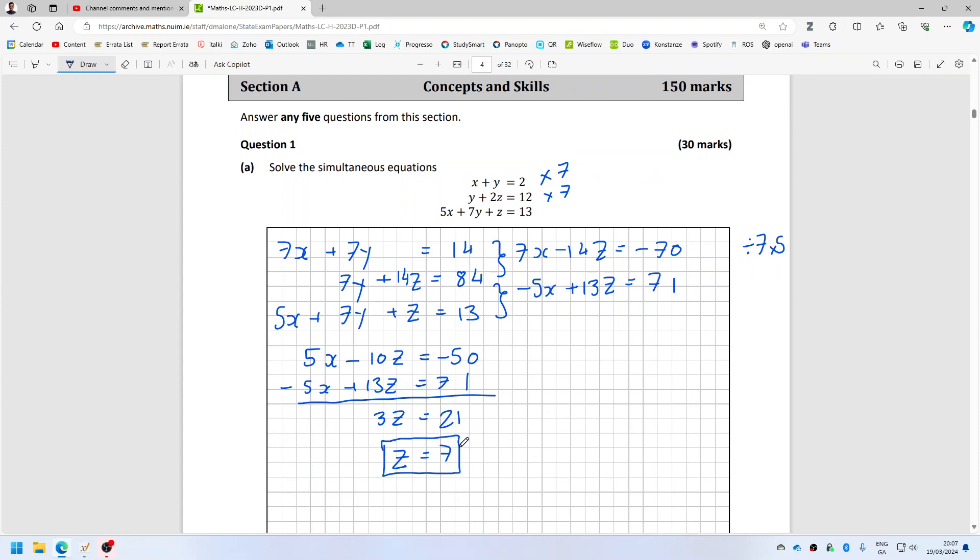And then I can substitute that back in here to get x. So let me see, that would be -50 + 10z, that'd be -50 + 70 = 20, 20 divided by 5 is 4. And then x + y = 2, so if x is 4 then y has to equal -2.